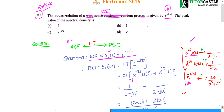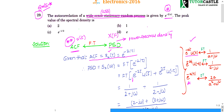One important thing to know: autocorrelation function and power spectral density (PSD) are Fourier transform pairs of each other. If autocorrelation is in the time domain as x(τ), then its Fourier transform gives x(ω). So R_x(τ) and S_x(ω) are Fourier transform pairs.